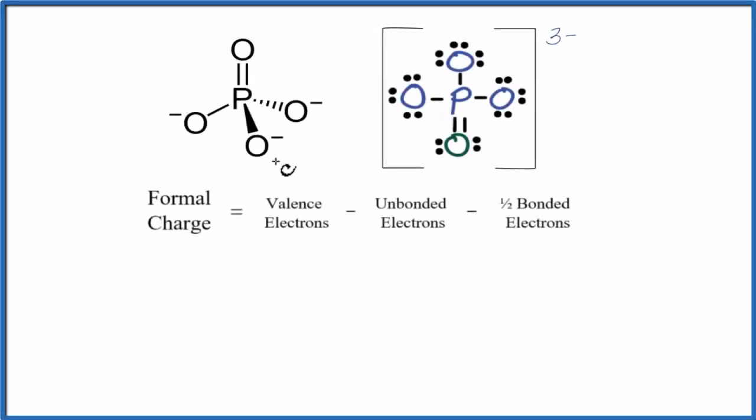To calculate the formal charges for PO4 3-, the phosphate ion, we'll use the Lewis structure here and this formula. So I have two representations. This is one way you could draw it, and this is another. This one's a little bit easier to use when we're calculating formal charges because we can see where all the electrons are.